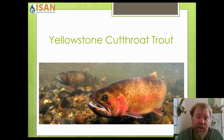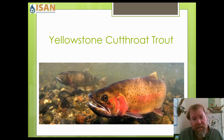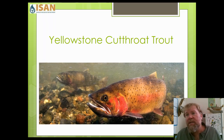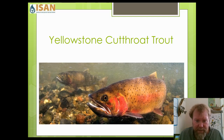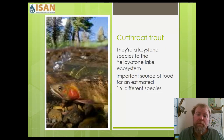Now let's talk about Yellowstone cutthroat trout. Yellowstone cutthroat trout are considered a keystone species in the Yellowstone Lake area of Yellowstone National Park. There are 14 subspecies of cutthroat trout in the west, and the Yellowstone cutthroat trout is native only to the Yellowstone River ecosystem, which includes Yellowstone Lake. It is also found in the Snake River drainage that flows west toward the Pacific Ocean.